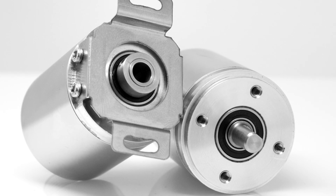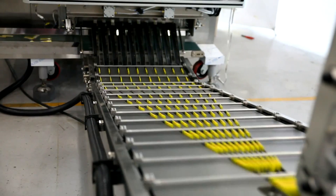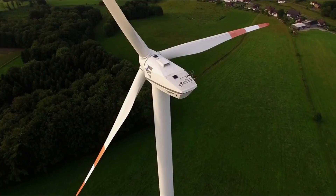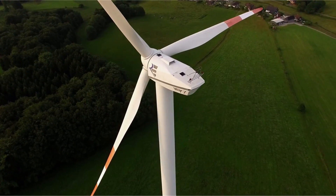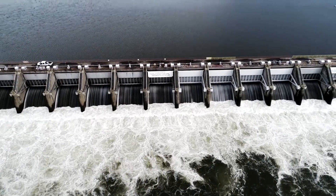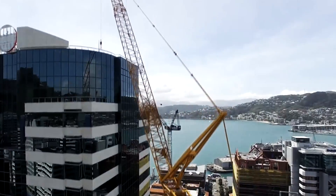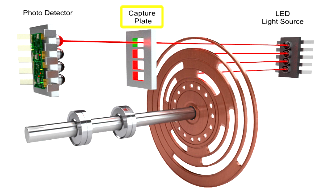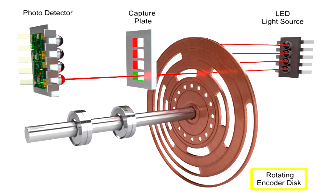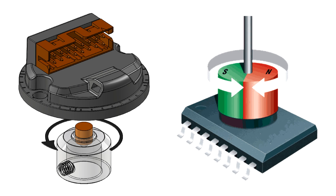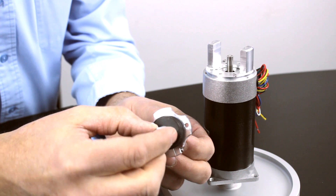Absolute encoders are the best choice for applications where exact position needs to be known. They are often the preferred solution when the device is inactive for long periods of time or moves at a very slow rate, such as floodgate control, telescopes, cranes, or valve positioning. Industrial encoders commonly use either optical or magnetic sensing technologies. An optical encoder uses the interruption of a beam of light to produce a signal, while a magnetic encoder relies on alternating positive and negative magnetic poles.